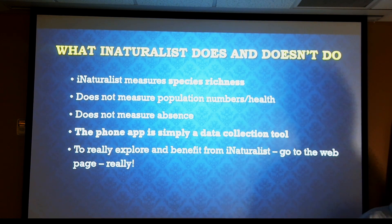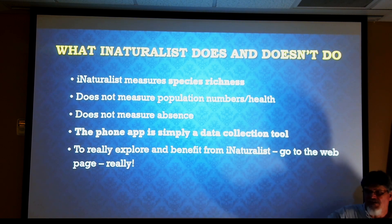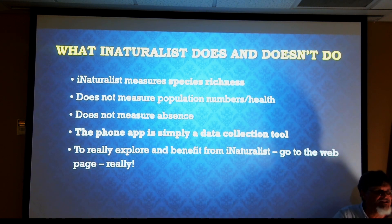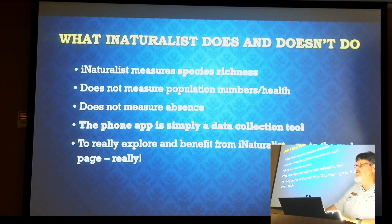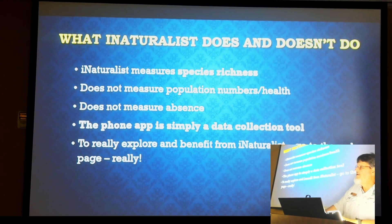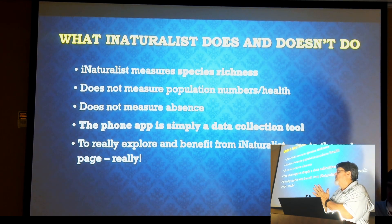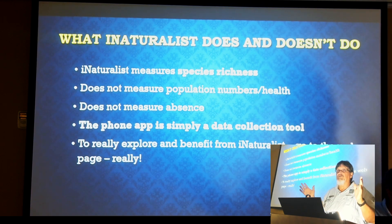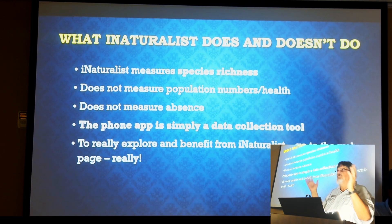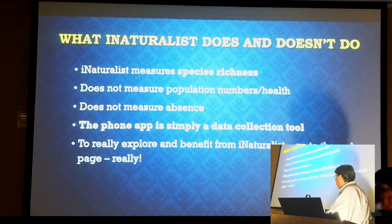iNaturalist is great for a lot of different things, but it doesn't do everything. It measures species richness — it tells scientists and everybody else that this thing was here at this date and time. It doesn't measure population numbers or health. It obviously doesn't measure absence. The phone app is a data collection tool. A place where you can really explore iNaturalist is on the webpage — a lot of people don't use the webpage, but there are all kinds of things you can do there.